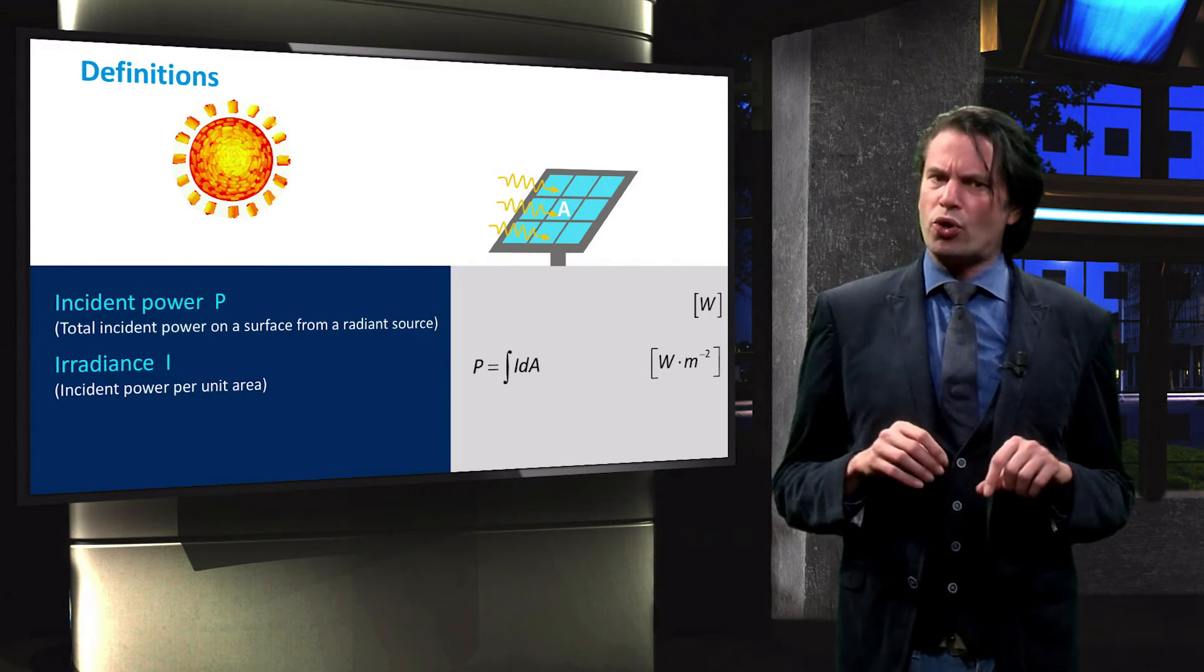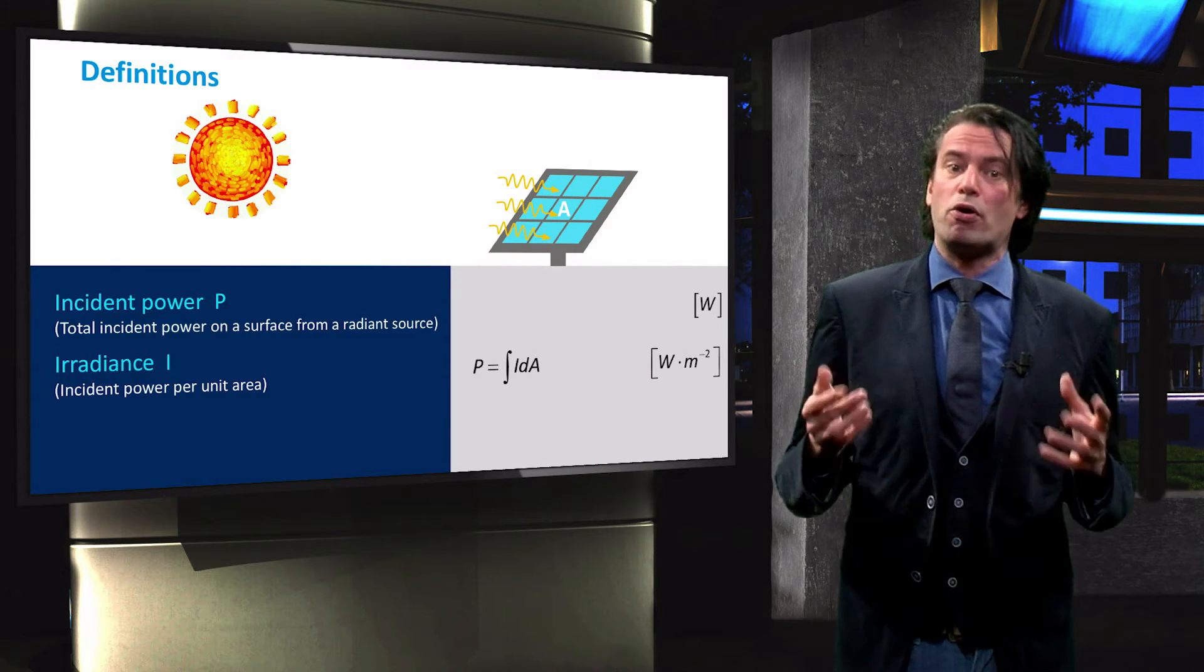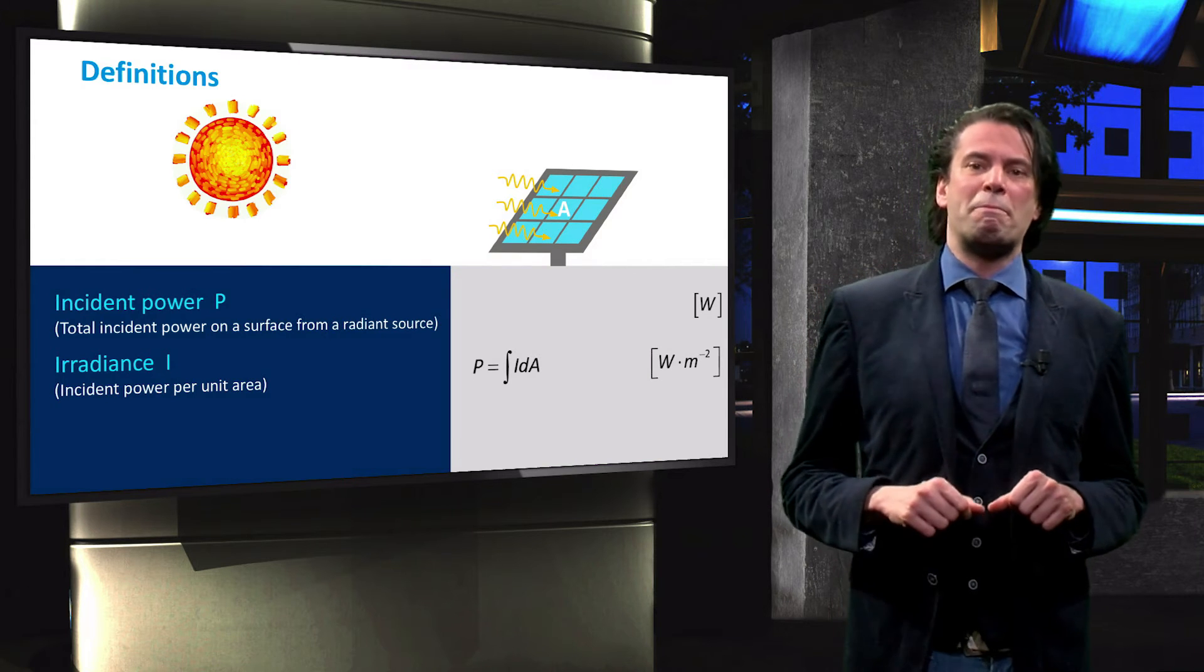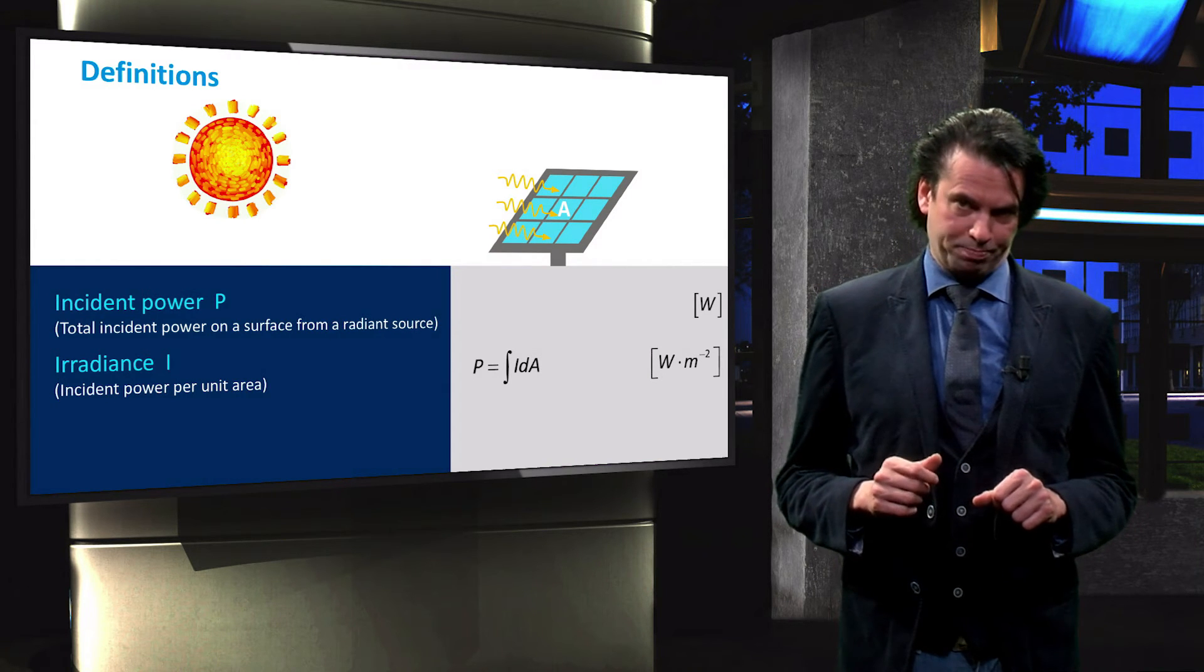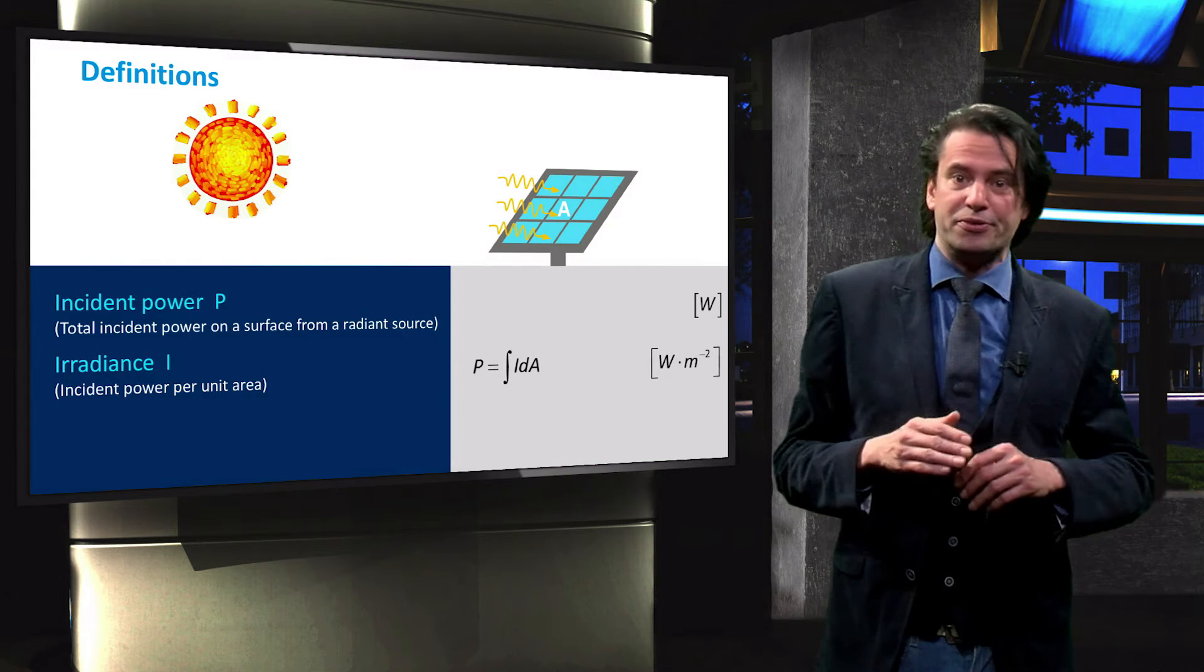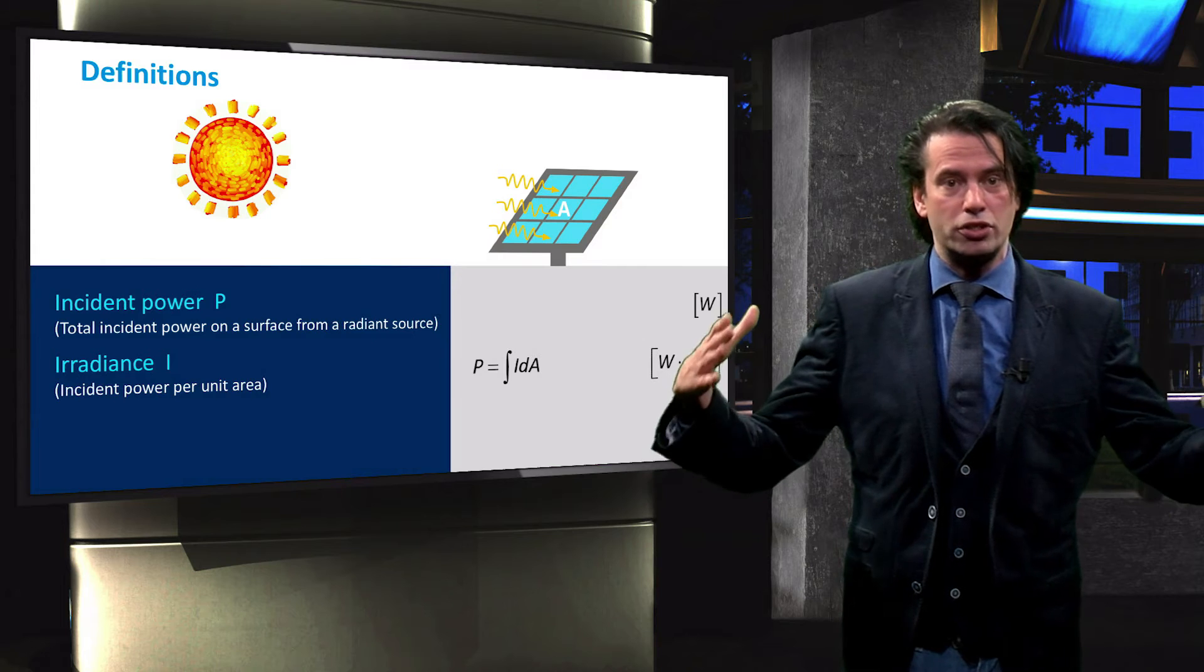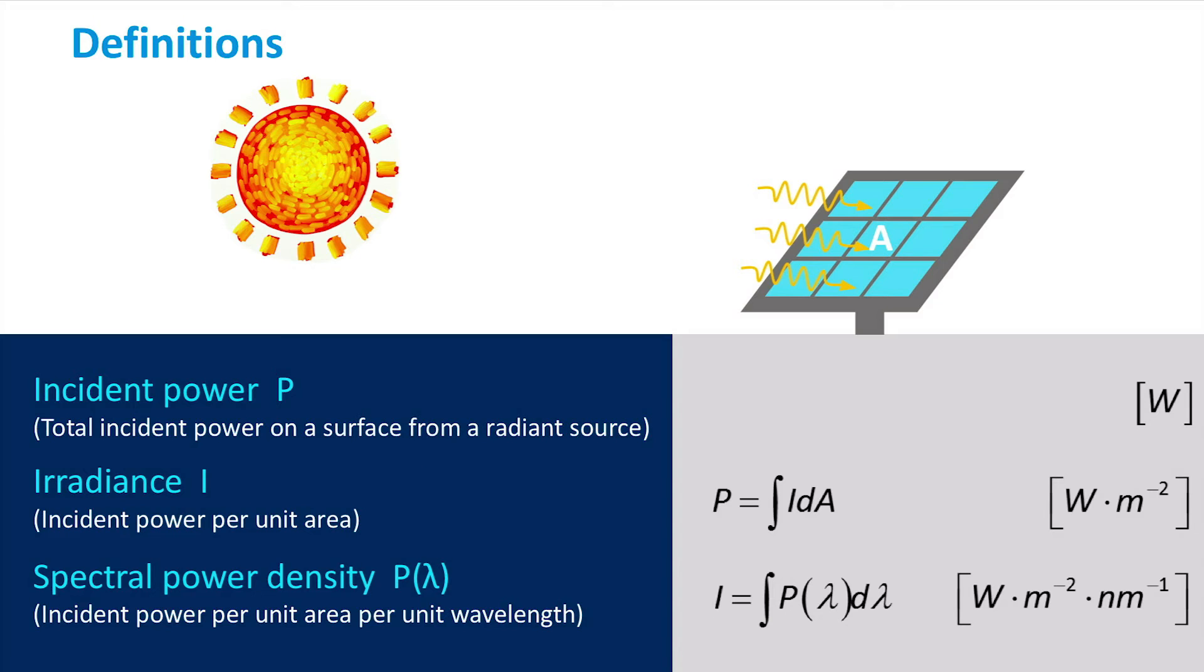The irradiance, or incident power density, is the total incident power per unit area. It is therefore measured in watt per square meter. By integrating the irradiance over the entire surface area, we obtain the total incident power.